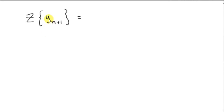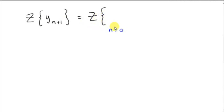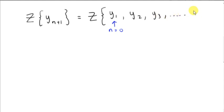Let's consider the general case of a sequence that has been shifted by one place to the left. Let's write out some of the terms of this sequence. To get the first term, we let n equal 0 and we get y sub 1. To get the next term, we let n equal 1 and we get y sub 2. Then we get y sub 3, and so on.